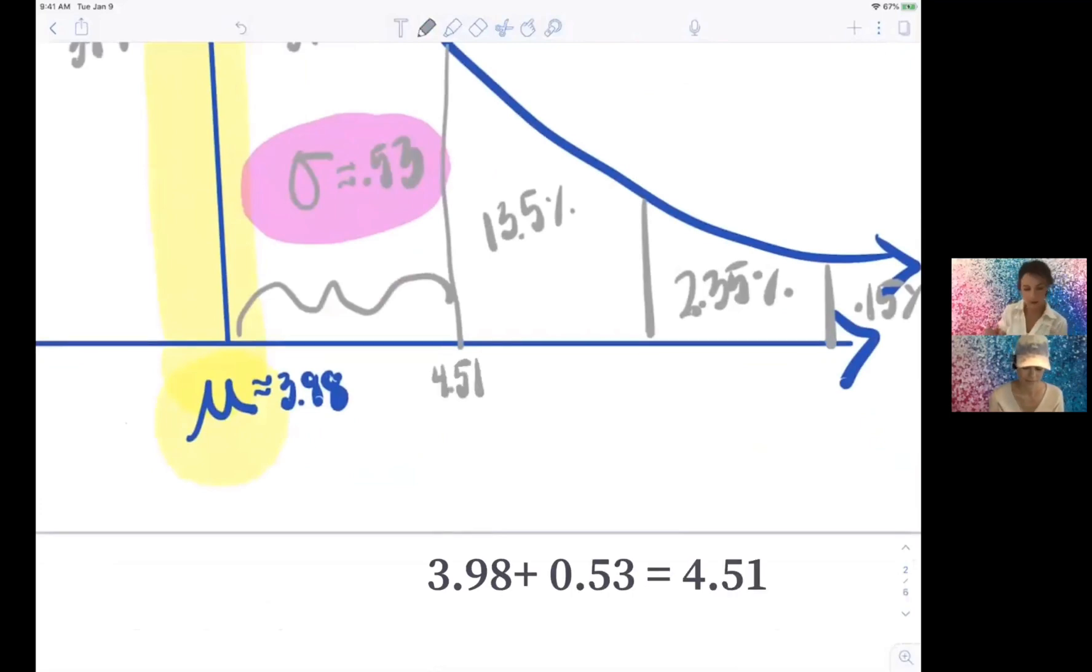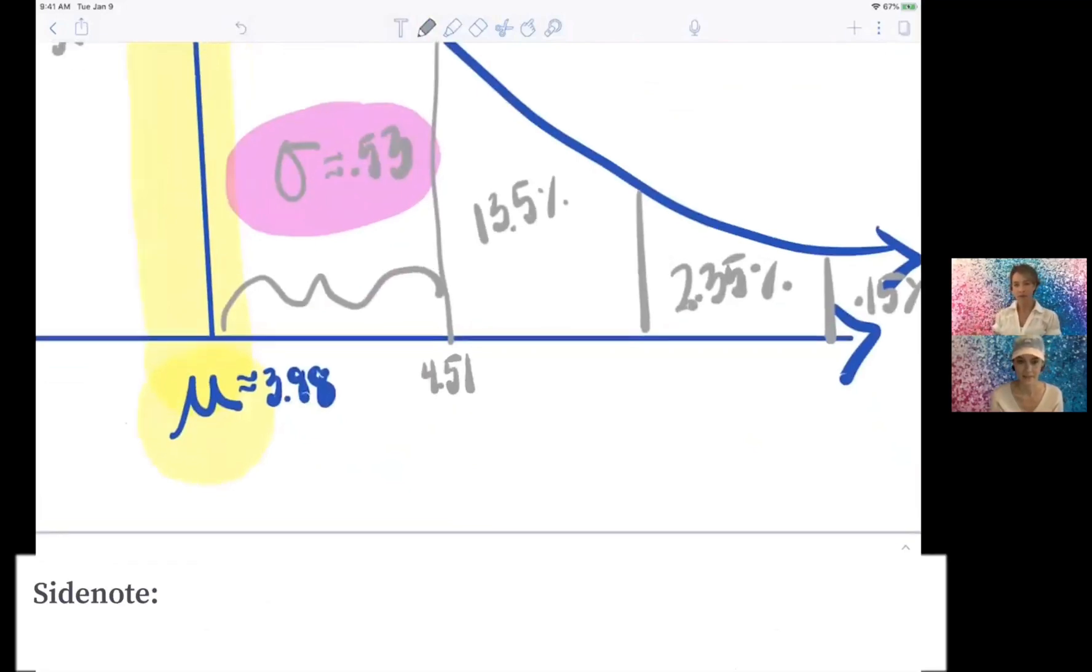So that's 4.51. So one standard deviation to the right we have 4.51, so that would be the song with a z-score of one, just throwing in some review. Yes, what would be the song length with a z-score of two, or two standard deviations from the mean?